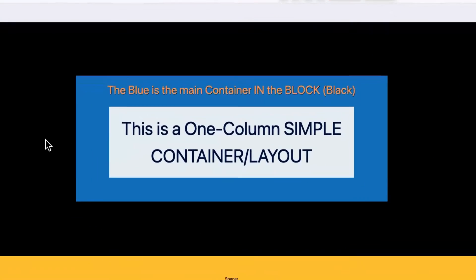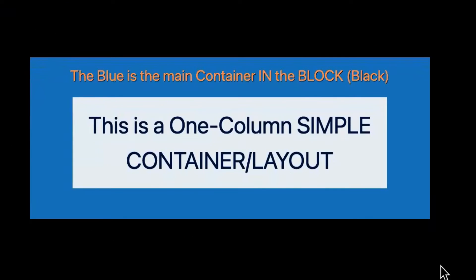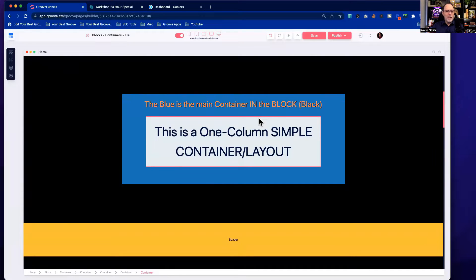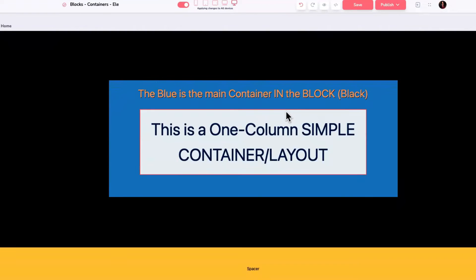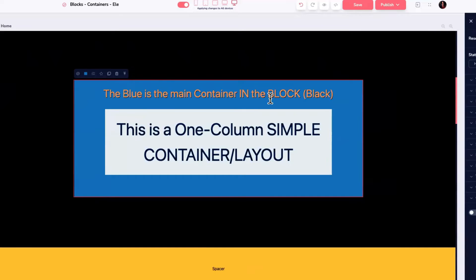Here we have the black block with a blue container inside it, and inside that blue container I put another container. Every block has to have one container — I call that the main container or home container of the block. It's important because I don't often put elements directly in that home container, since you cannot duplicate and move a home container to another block. We do have a workaround now where you can save it and reuse it.